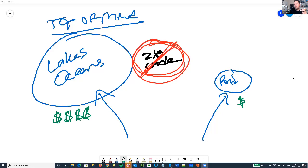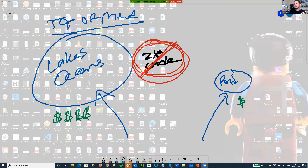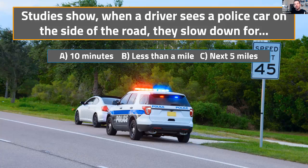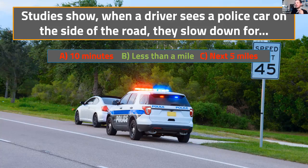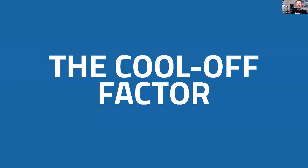The next thing I want to cover is something called the cool off factor. How does this affect you and how does it all tie together? Quick question: when a driver sees a police car on the side of the road, how long do they slow down? A) 10 minutes, B) less than a mile, or C) the next five miles? Everyone's coming in with B — and that's right. Why? It's the cool off factor — out of sight, out of mind.